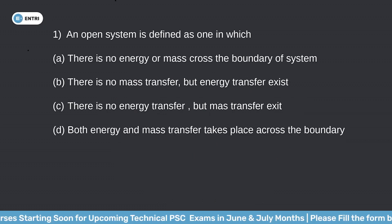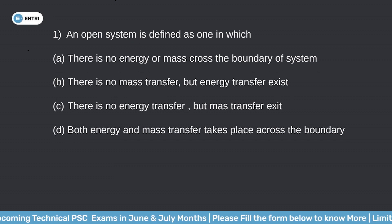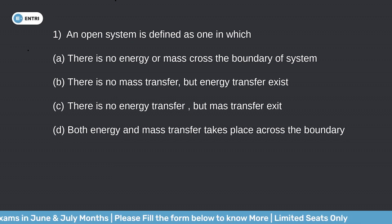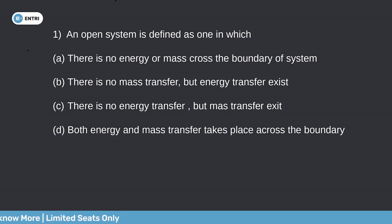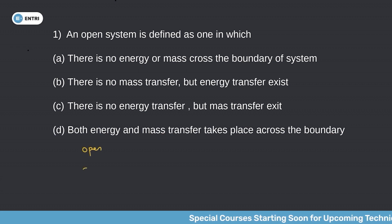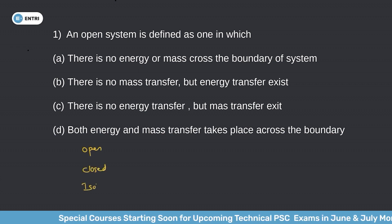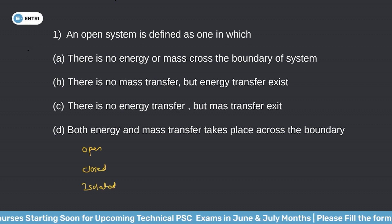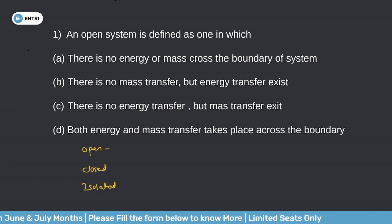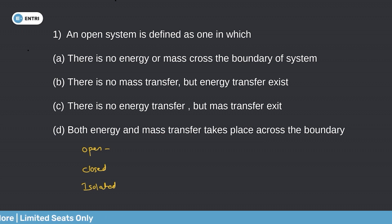Question 1: An open system is defined as one in which — option A: there is no energy or mass across the boundary; option B: there is no mass transfer but energy transfer exists; option C: there is no energy transfer but mass transfer exists; option D: both energy and mass transfer takes place across the boundary. Systems are classified as open system, closed system, and isolated system. An open system is defined as a system which permits both energy transfer and mass transfer.